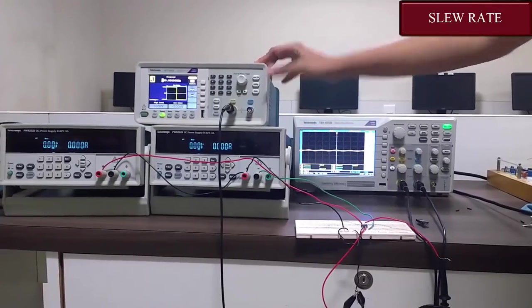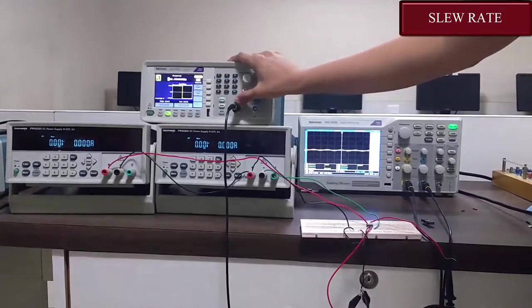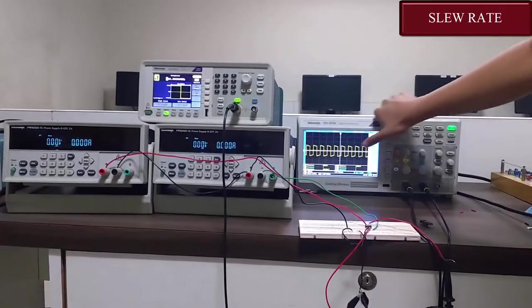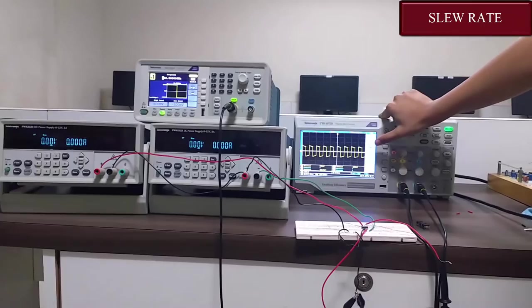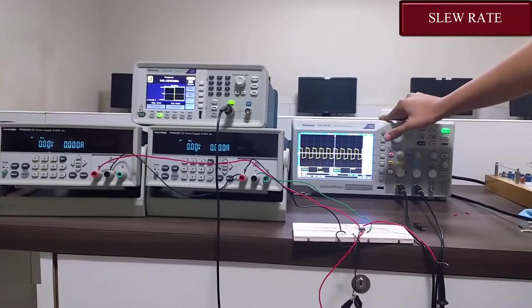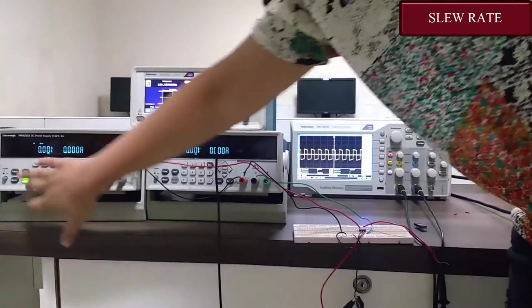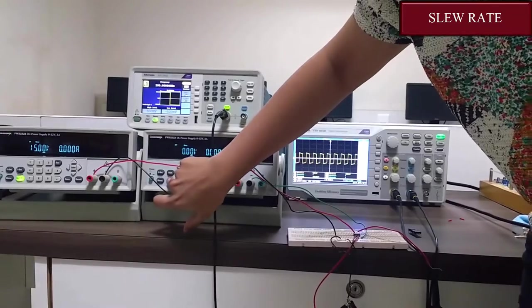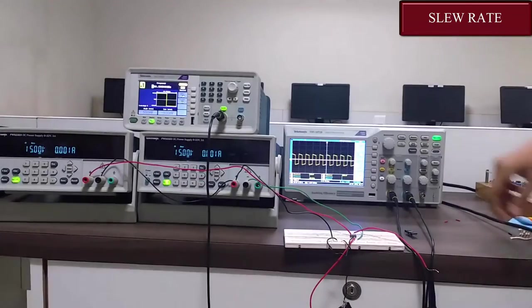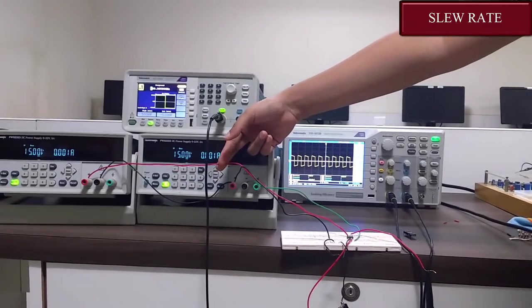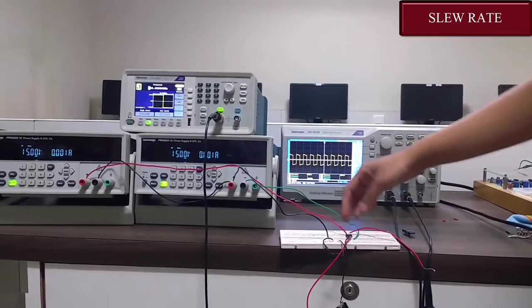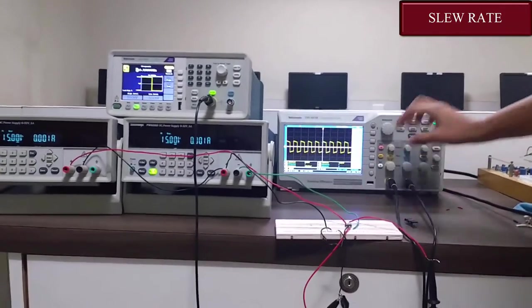Connection generator. I have already given the square input. Now I am giving it. Now you can see the square result. Now let's give the output. Before doing that let's switch on the power supply. It is set for plus 15 and minus 15 volts. We have connected as per the connections that we have already mentioned. And let's see the output.